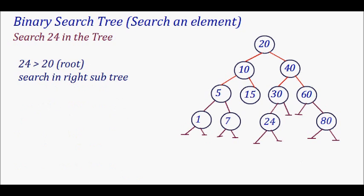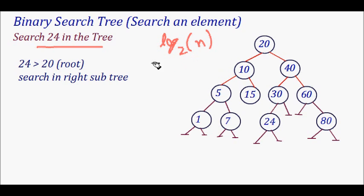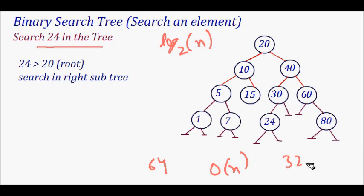Let's say we want to search element 24 in this tree. The power of a binary search tree is that it makes the search very fast — it is logarithmic, O(log n) base 2. If there are n elements you require just log n base 2 comparisons. For example, with linear search on 64 elements it is O(n), averaging around 32 comparisons, but here you just need log 64 base 2, which is just 6 comparisons.